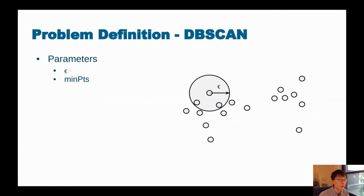Let me first define the problem. DBSCAN takes in two parameters, epsilon and minPts. Epsilon is defined as the radius of the circle centered at each data point, and minPts is a threshold on the number of points inside such circles. We call such circles epsilon circles.